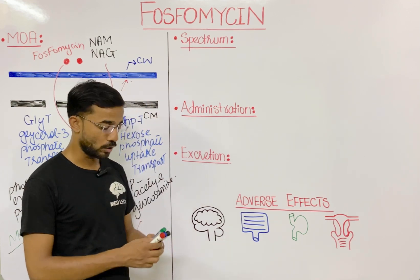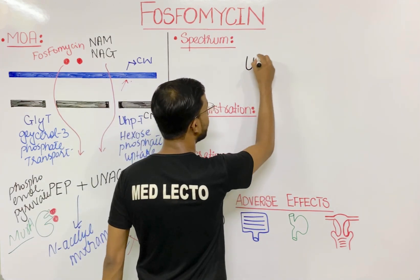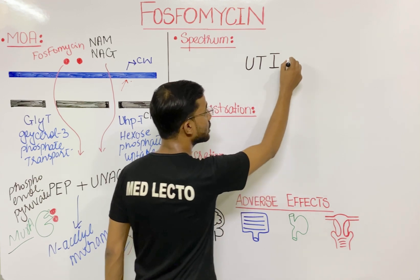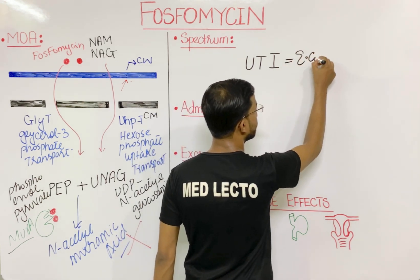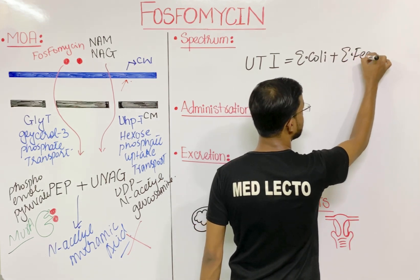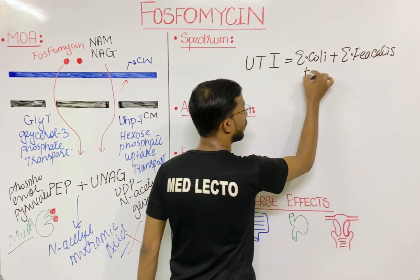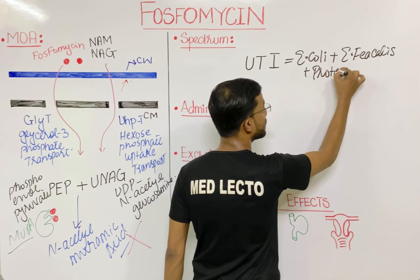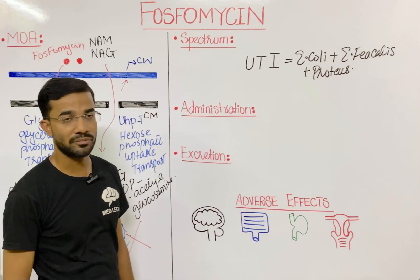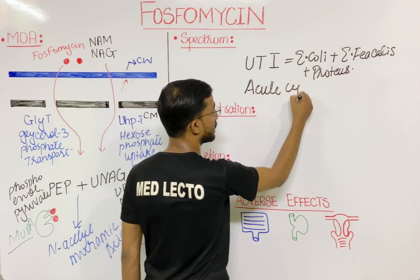Looking at the antimicrobial spectrum, fosfomycin is mostly used for UTI — urinary tract infections — caused by E. coli, Enterococcus faecalis, and Proteus species. It can also be used in acute cystitis, which is a bladder infection.